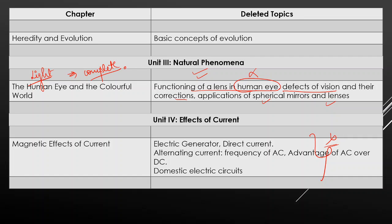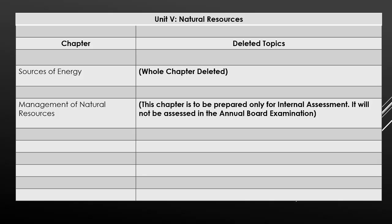Next, Electric Generator is completely deleted, nothing related to this. DC is also not there. Sources of Energy chapter, this whole chapter is deleted. No topic from this chapter will come, whatever topic is in this, complete chapter is deleted. Next chapter, Management of Natural Resources, this chapter is such that in case if your internal assessments happen after 2-3 months, if pre-boards happen, this chapter will only come in that. It will not come in main annual board exam. This chapter will only come in your internal assessment, that is, pre-boards, only in that.